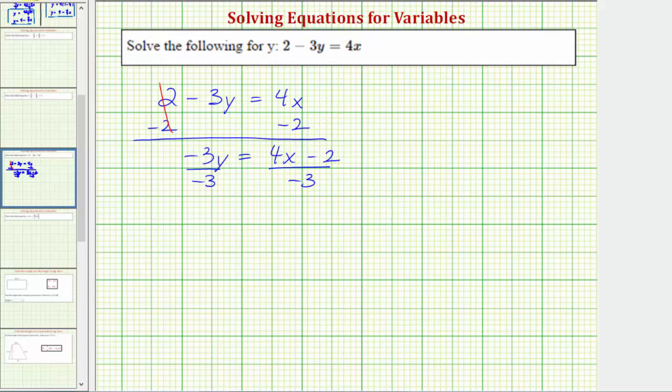So on the left side, dividing by negative 3 undoes multiplying by negative 3, so the left side simplifies to y, or negative 3 divided by negative 3 is 1, and 1 times y is y. So now we have the equation solved for y: y equals the quantity 4x minus 2 divided by negative 3.